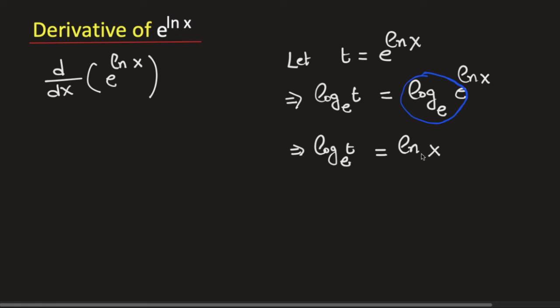As this is the logarithm of x with base e, equating these two we will get this t will be equal to x. So we will get t is equal to x. That means this is equal to x.